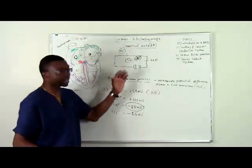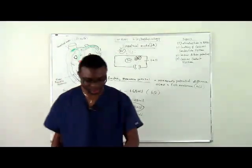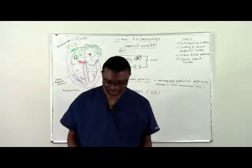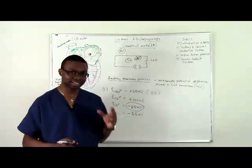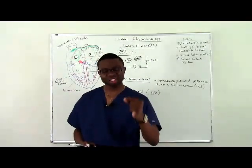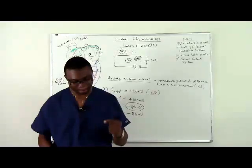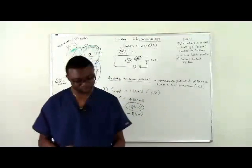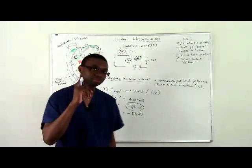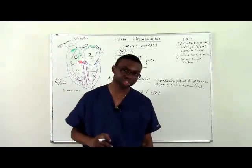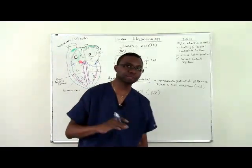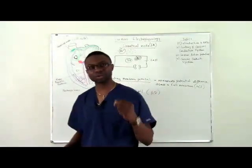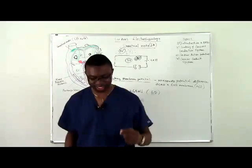Now let's look at the SA node. The SA node cell has an unstable resting membrane potential. But before we move on to that, there's another important topic we need to cover: action potentials. Before I can talk about depolarization and repolarization in the SA node, we have to understand what action potentials are.